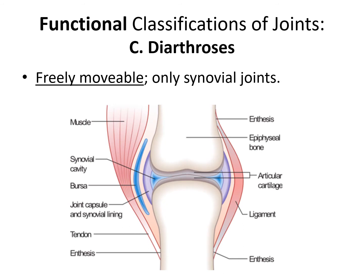Finally we have diarthroses, more commonly referred to as synovial joints. Here we have lots of movement and there's an actual physical space between the articulating bones that is filled with fluid. The bones have hyaline cartilage on the outside forming a very slippery layer that allows them to slide over each other. The shoulder joint would be an example. Note that 'diarthrosis' refers to the functional classification — lots of movement — while 'synovial' refers to the structure of the joint.